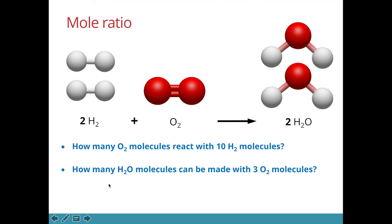How many water molecules can be made with 3 oxygen molecules? Look at the mole ratio again — 1 is to 2, so 3 is to 6. So I can make 6 water molecules if I have 3 oxygen molecules.